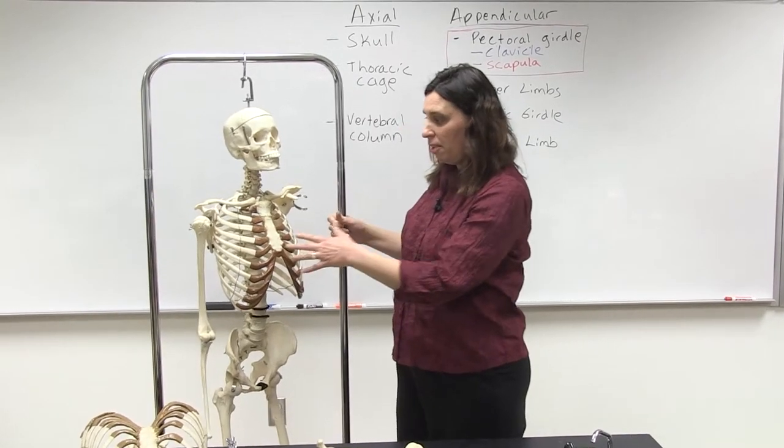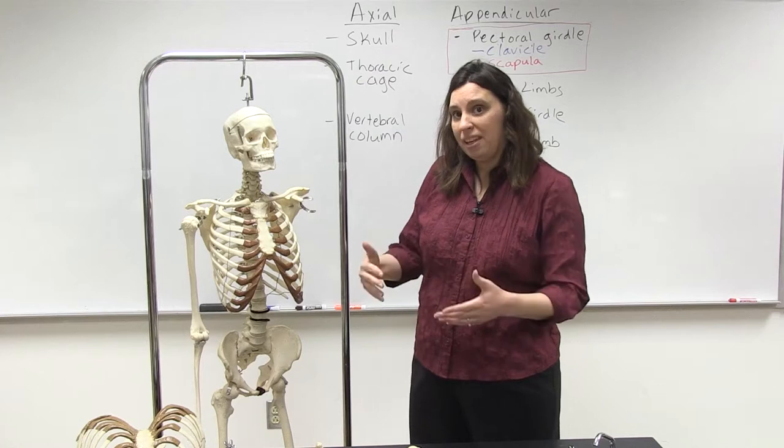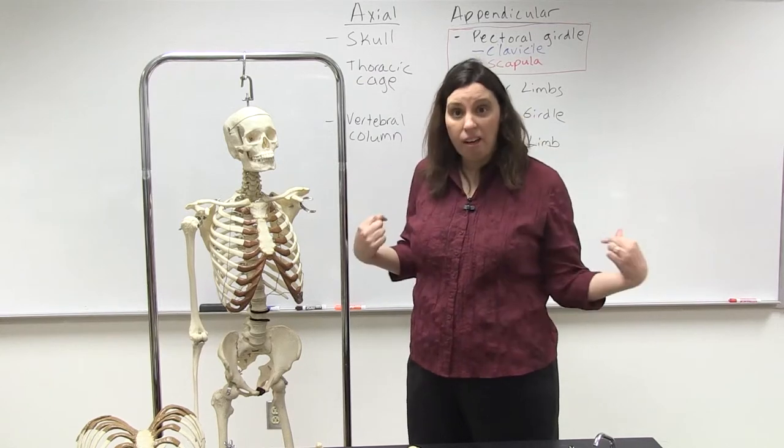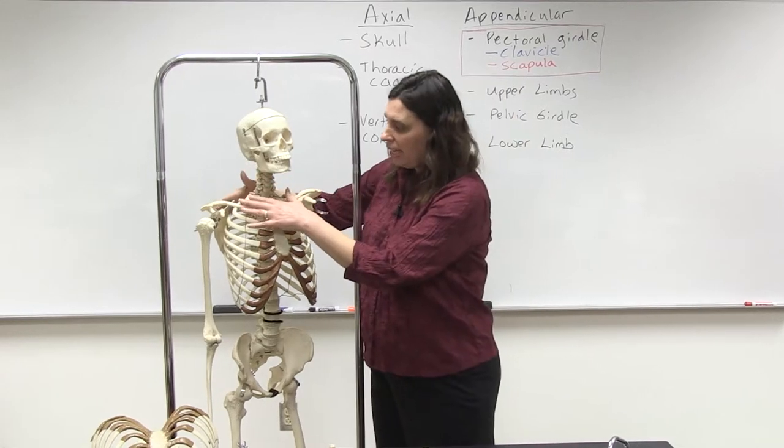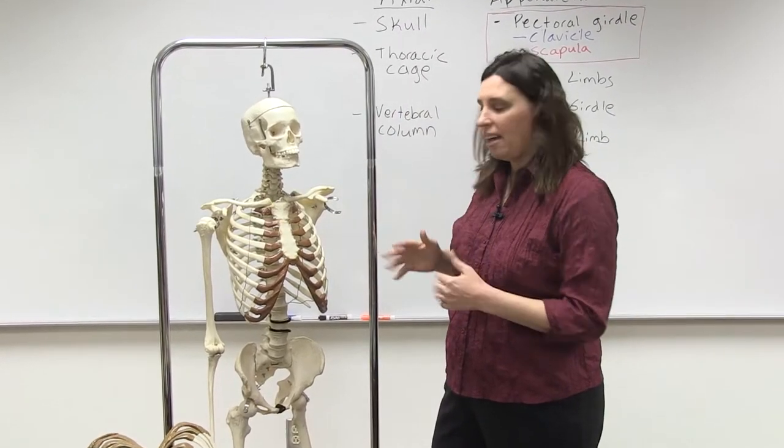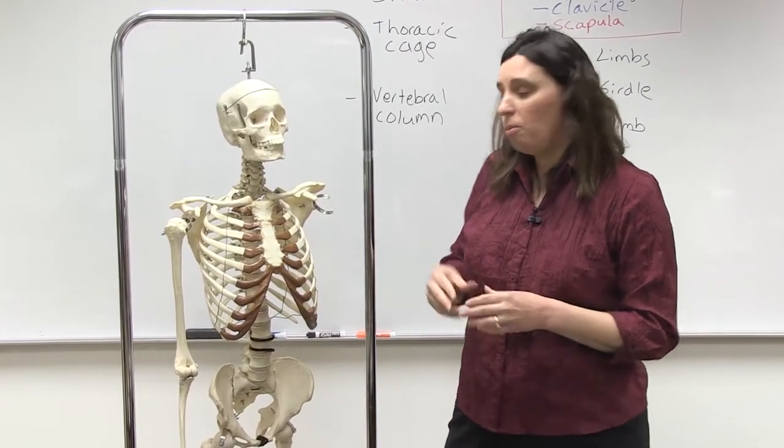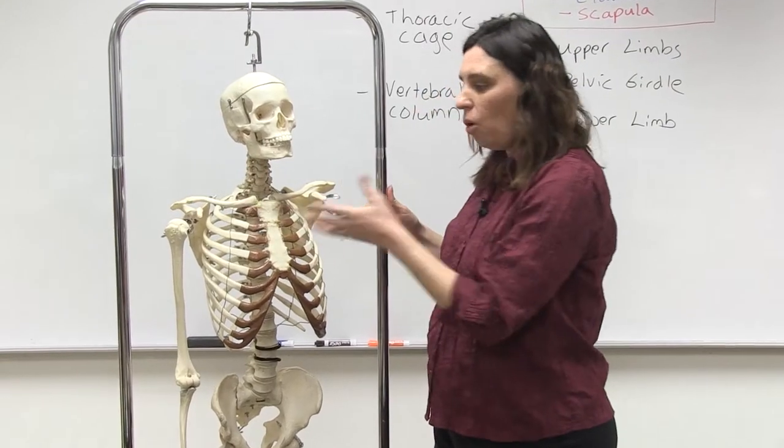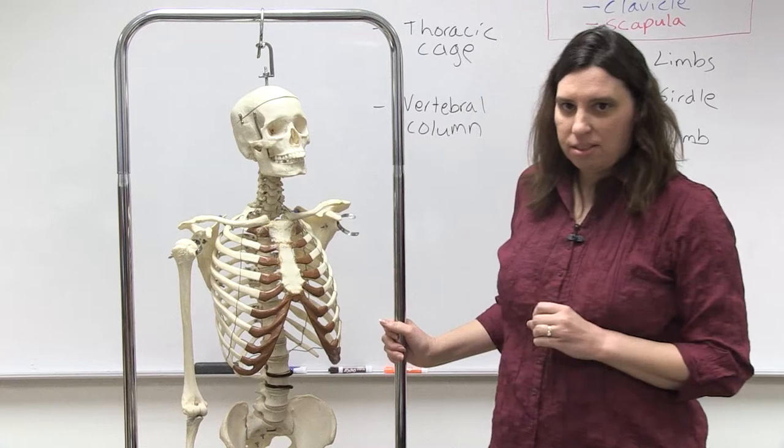Now, the appendicular skeletal system, on the other hand, and the term appendicular or appendage, think of it as hanging off, consists of the bones like the girdles that we'll be talking about that connect to the axial skeletal system. And the term girdle actually means a belt, so almost think like it's a belt kind of holding the limbs essentially to the axial skeletal system.